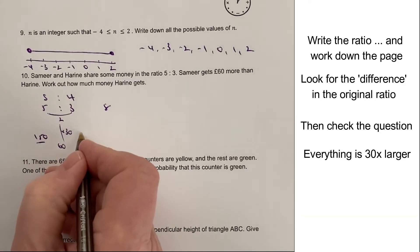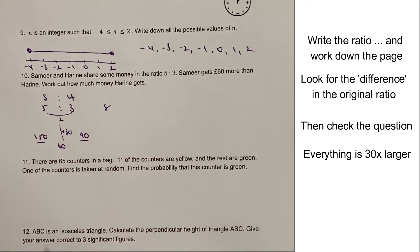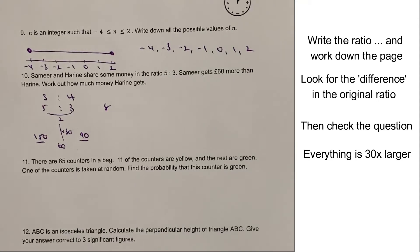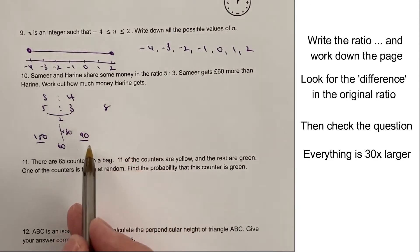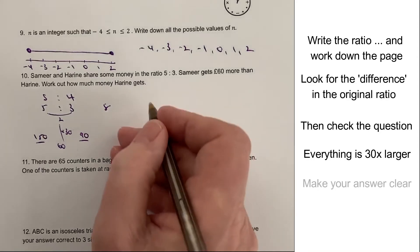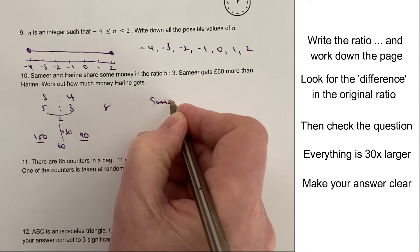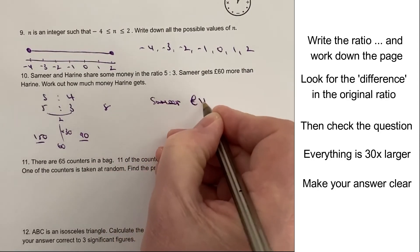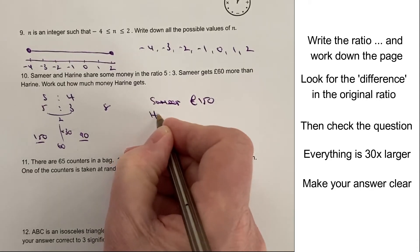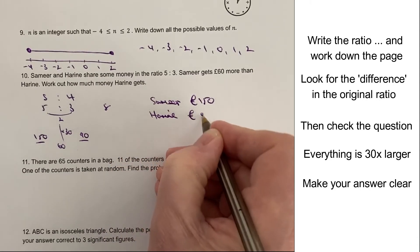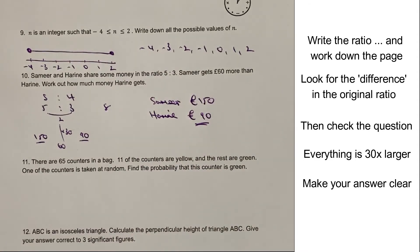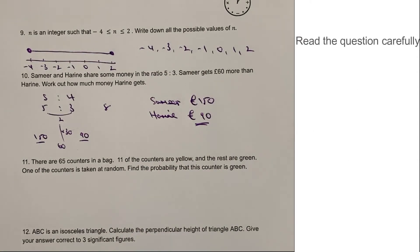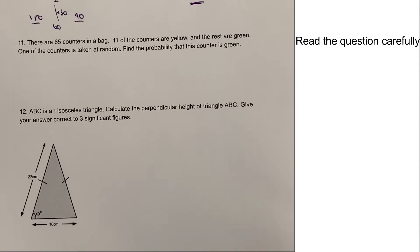And hopefully, you can see the difference between the two is actually 60 pounds. So the amount of money that Harin gets is actually going to be 90. But just for the sake of the video, I'm going to put that Samir gets 150 and Harin gets 90 pounds, which is the answer to that particular question. Let's move on then to question number 11.